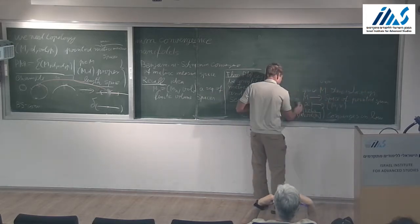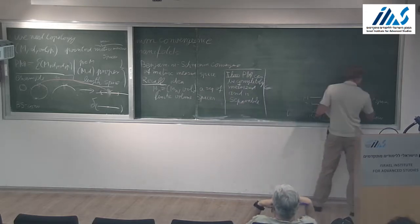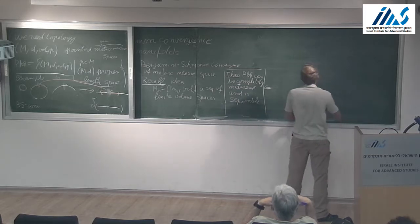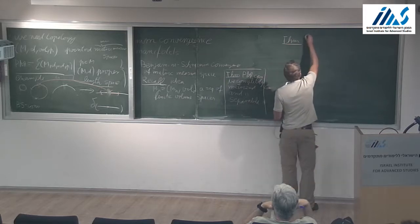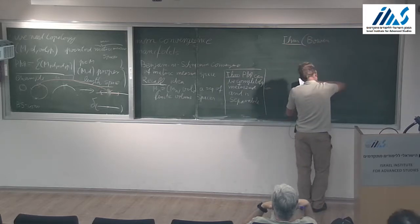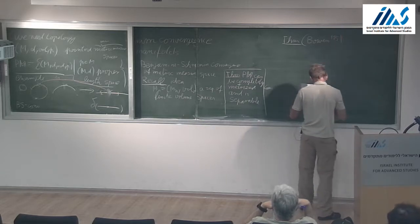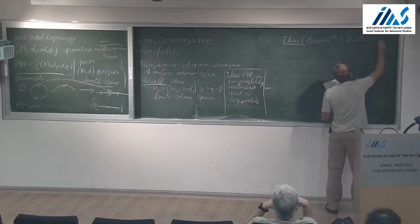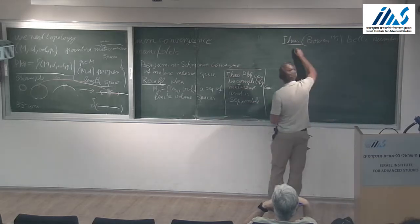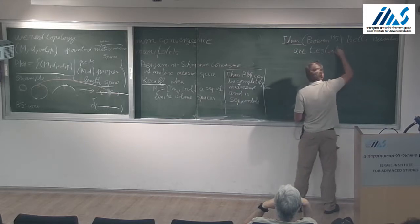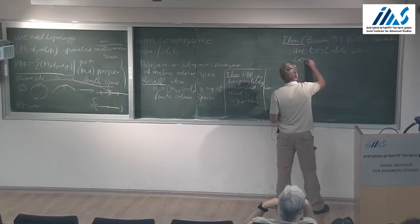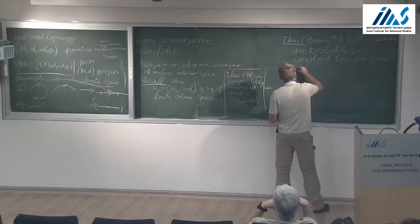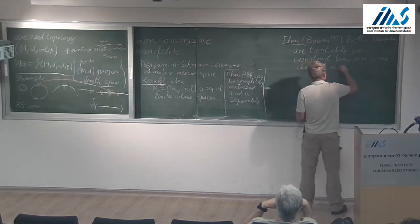Just to mention a result on this kind of spaces: Bowen, based on ideas of Elek, proved that Betti numbers of MM spaces are testable in constant time on some class of metric measure spaces.